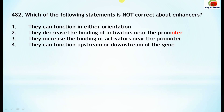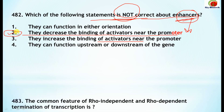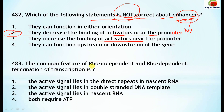Question 482: which of the following statements is not correct about enhancers? They can function in either orientation — this is correct. They decrease the binding of activators near the promoter — this is NOT correct, as the word 'enhancer' implies enhancement. The remaining options are correct: they increase the binding of activators near the promoter and they function upstream or downstream of the gene.